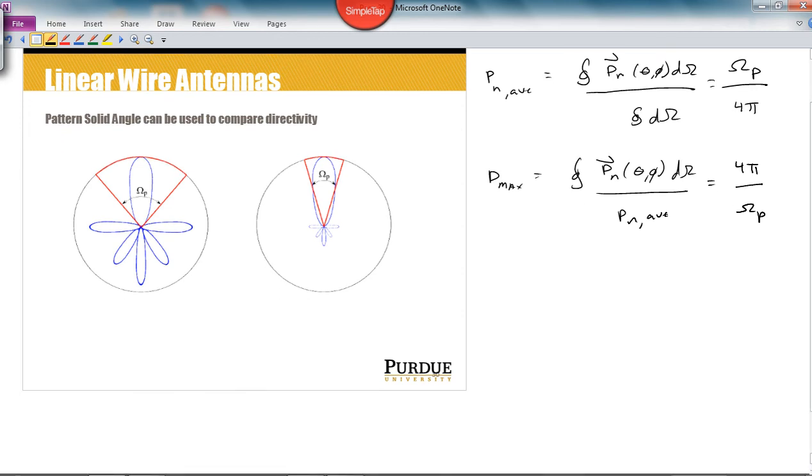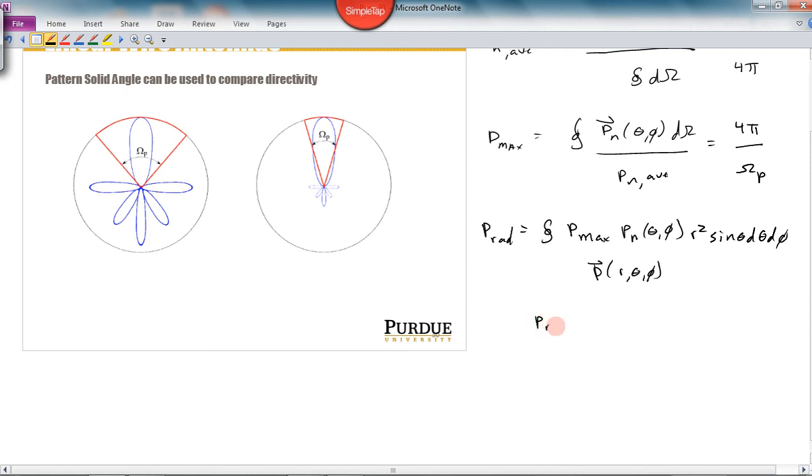And then finally, we have radiated power total, total power radiated by the antenna. And previously we calculated that as the normalized power density function, which could also be p max times the normalized power density function. If I multiply p max by the normalized power density function, I just get p of r comma theta comma phi. And then this thing gets multiplied by r squared sine of theta d theta d phi. And it turns out that the result of this integral is that the total power radiated in watts is r squared times the max power times the pattern solid angle.